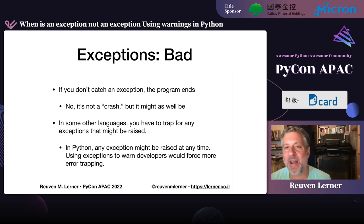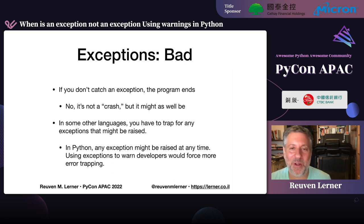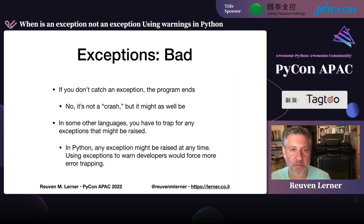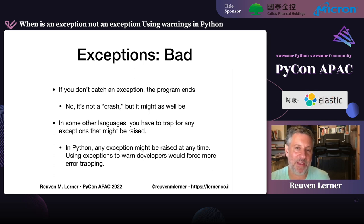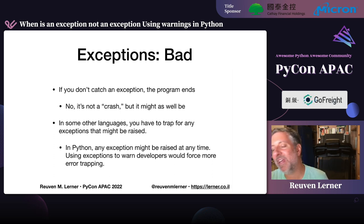People often see in Python a program exit because of an unhandled exception. People in the programming language world would say that's not a crash — your program didn't crash, you just didn't handle the exception. But come on, we all know it's a crash. If an exception is raised and no one traps it, the program exits. We want to gently give people messages and warn them, not throw the whole program out because of a problem. In Python, any exception could be raised at any time, so using exceptions to warn developers would force more use of try/except and make our code less readable.